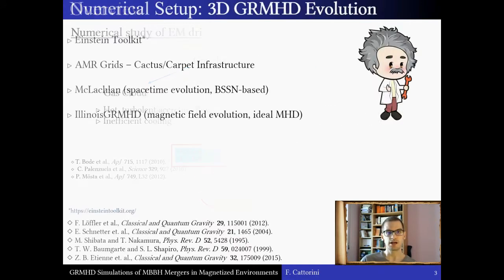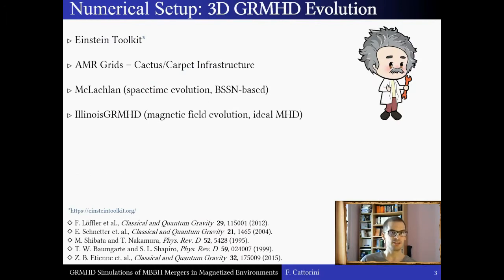So, I carried out three-dimensional MHD simulations using the Einstein toolkit on adaptive mesh refinement grids supplied by the Cactus Carpet environments, and I adopted a full GR BSSN-based spacetime metric evolution, which is provided by the McLachlan module, and performed the fluid and magnetic field evolution with the Illinois GRMHD code in the ideal MHD framework.